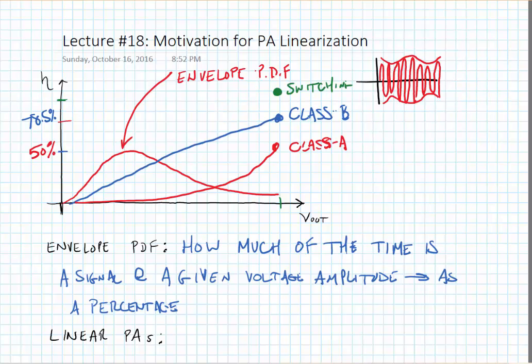Our switching amplifiers have peak efficiencies that are equal to 100%, but in general they aren't able to vary their efficiency as a function of the output amplitude because they generally don't work very well when they're not operating at full swing.